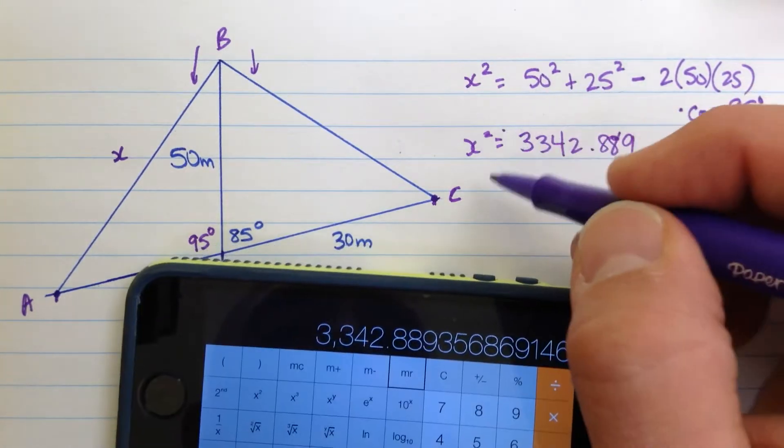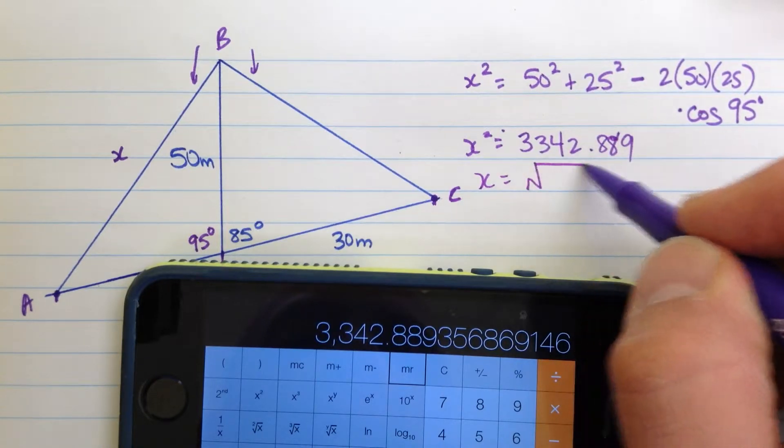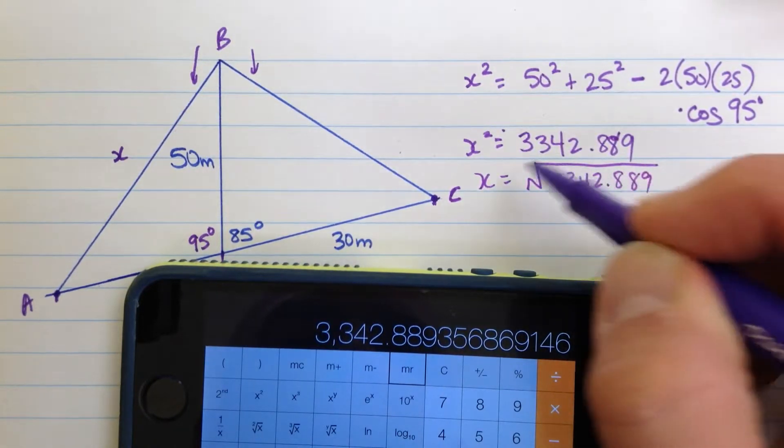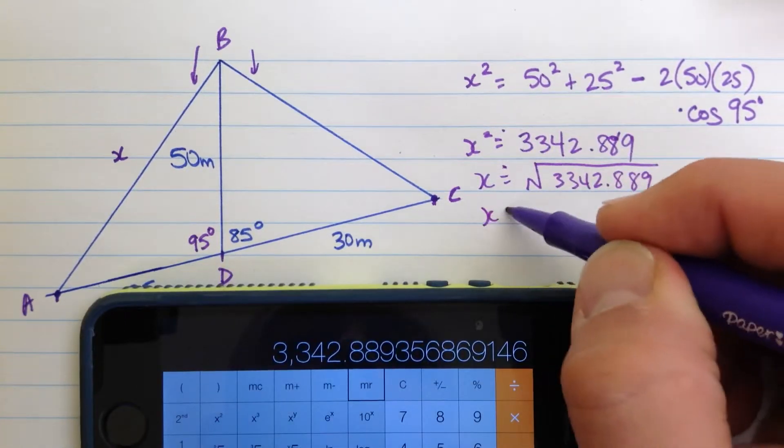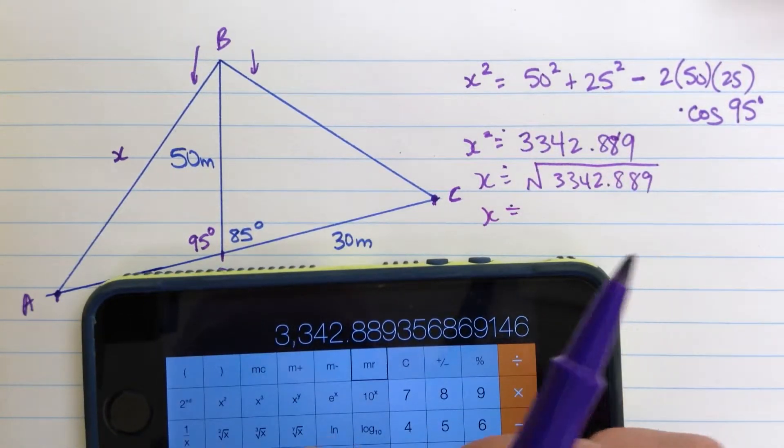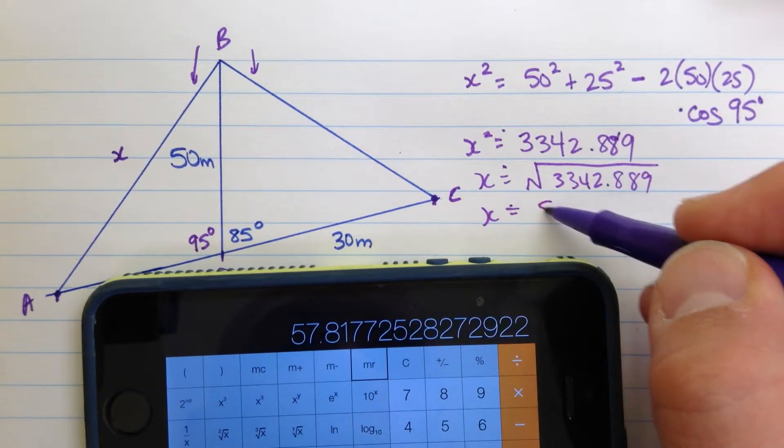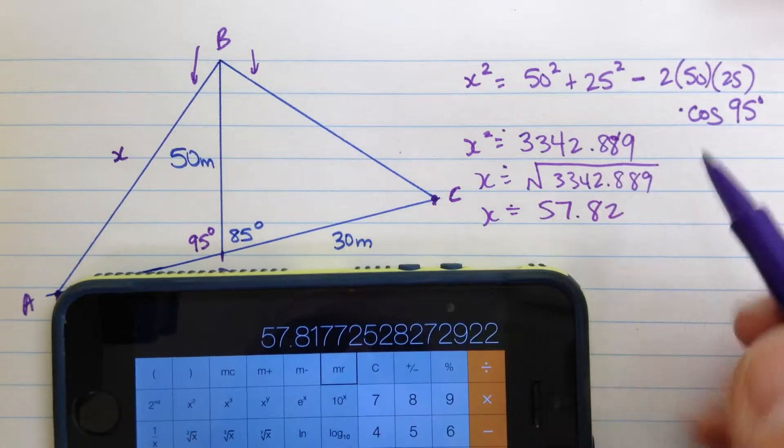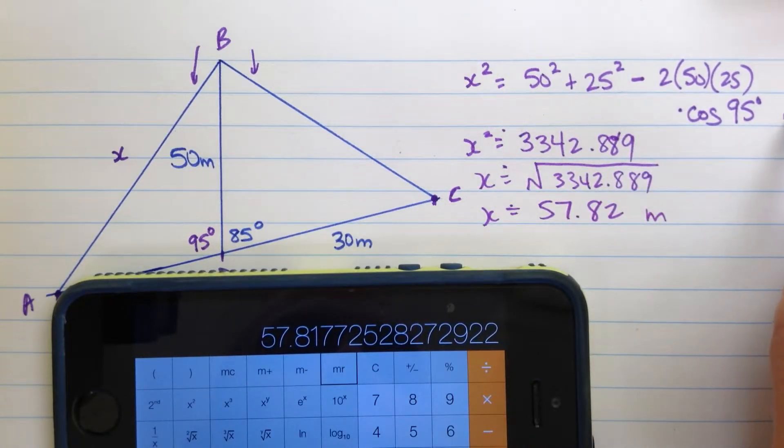And so that means that the side x has to be the square root of that number. So x is approximately, let me hit the square root button, 57.82, and that will be in meters. Everything's in meters here.